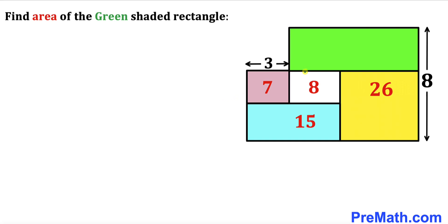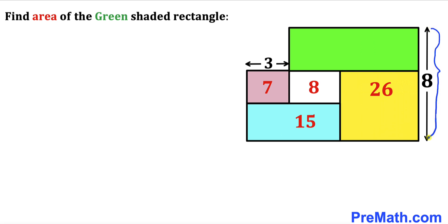Welcome to pre-math. In this video we have a composite shape that consists of a bunch of rectangles, such that the area of the yellow rectangle is 26, the area of the white rectangle is 8, the area of the pink rectangle is 7, and the area of the blue rectangle is 15. The horizontal side length of the pink rectangle is 3, and the vertical side length of the big shape is 8 units. Our task is to calculate the area of the green shaded rectangle.